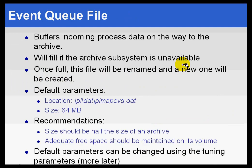Normally, we simply take the data out of that Event Queue and send it over to the PI Archive subsystem, which subsequently puts it into the cache and then the Archive.